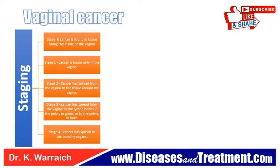After vaginal cancer is diagnosed, tests are done to find out if cancer cells have spread within the vagina or to other parts of the body. This process is called staging, and the information gathered determines the stage of the disease. It is important to know the stage in order to plan treatment. Staging procedures include biopsy and chest X-ray to find any abnormality in the lungs or chest area.